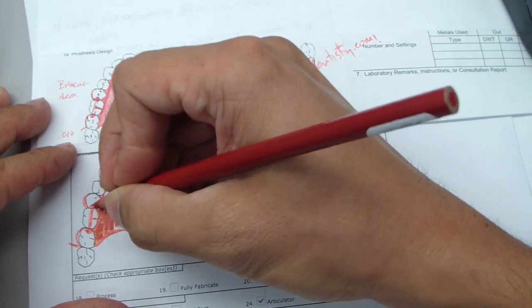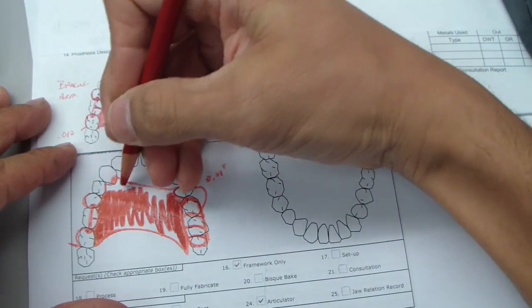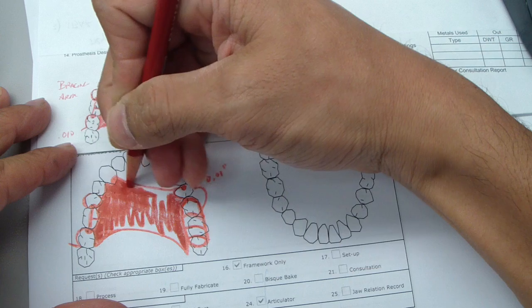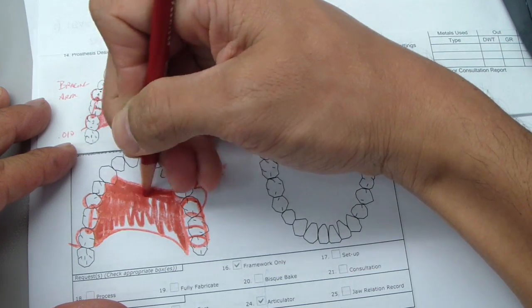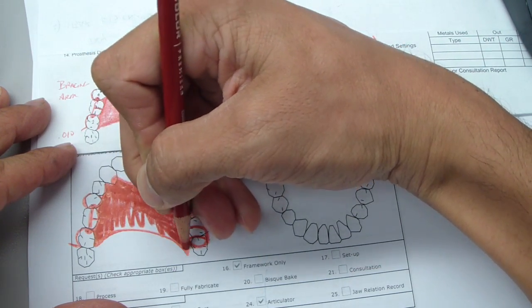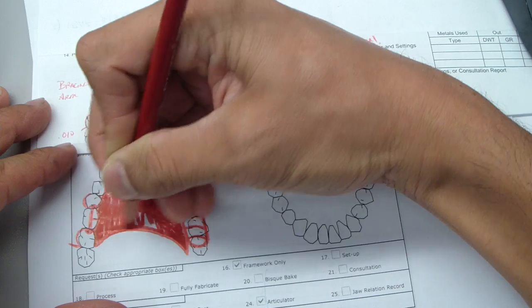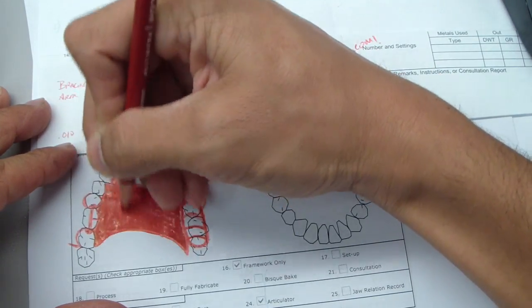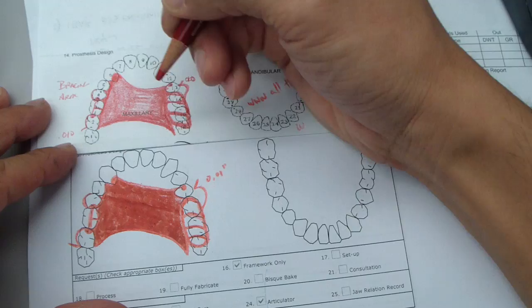So essentially that is, in a nutshell, how one way of drawing a partial denture. Now, it may seem common sense, but I'm telling you, if you don't do lots of these, you're going to forget. So that's all for today. I hope it helps in the future. Take care.